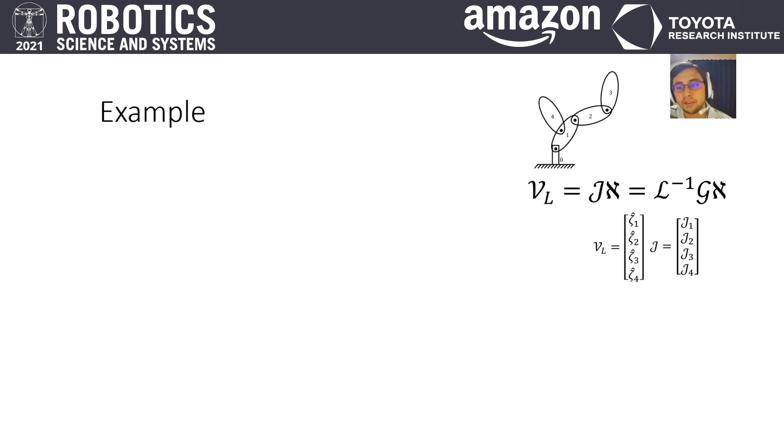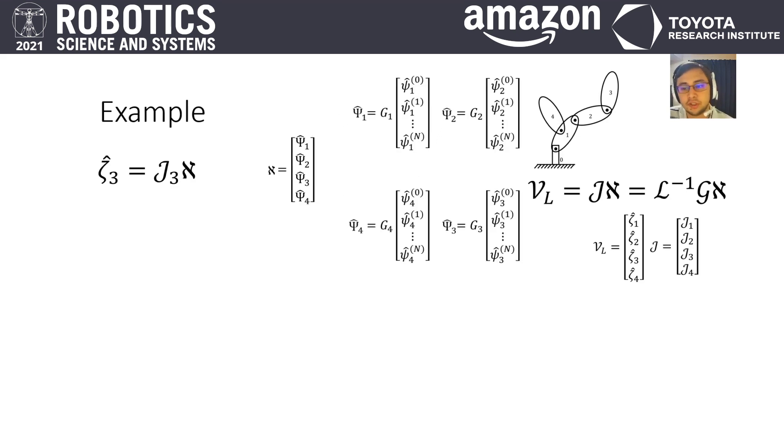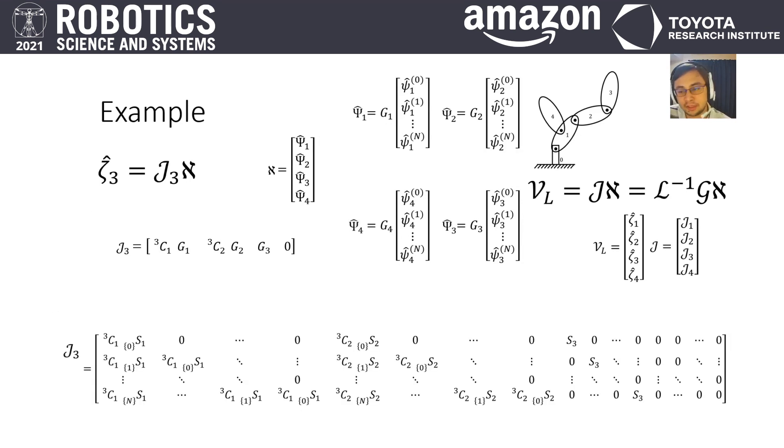To have a better understanding, let's take the following example. We seek ZT3, the link motion of link 3. Aleph is a comprehensive joint motion composed of each joint motion. And J3 can be computed from the matrix L and G, which is simply matrix multiplication between NCMTM and G.